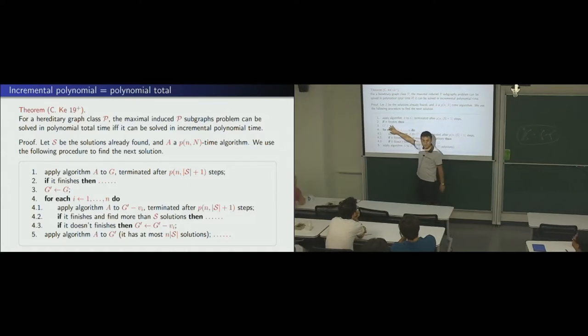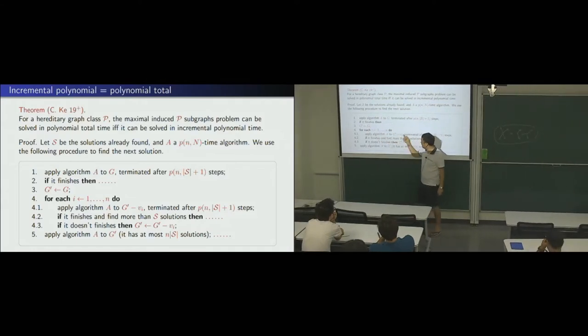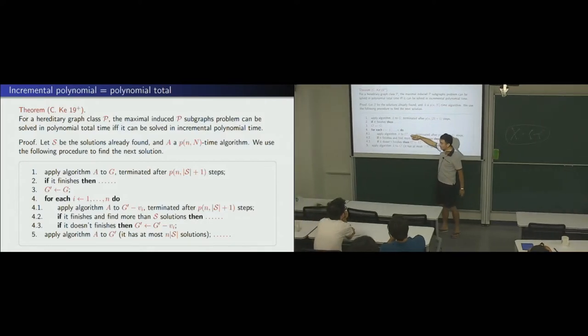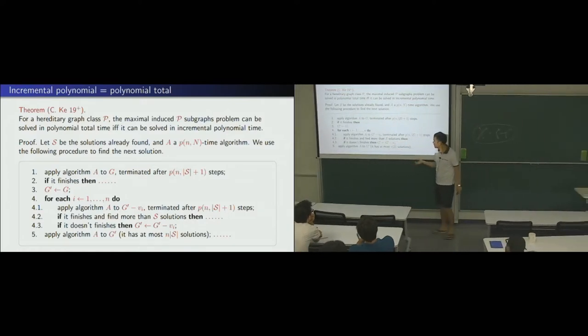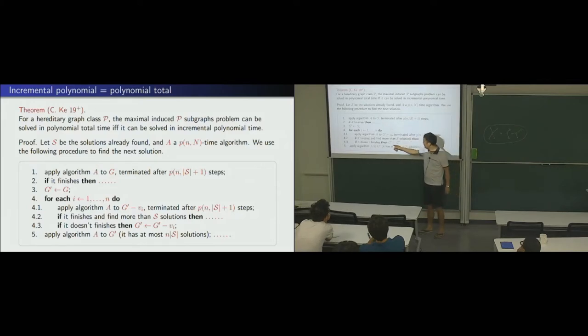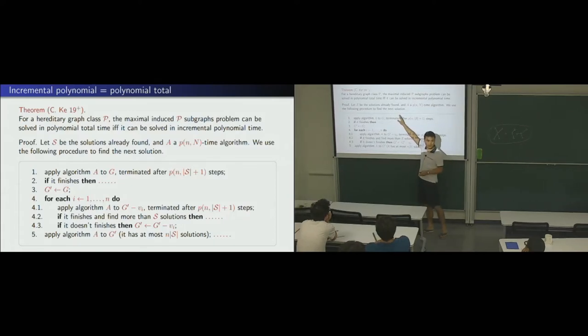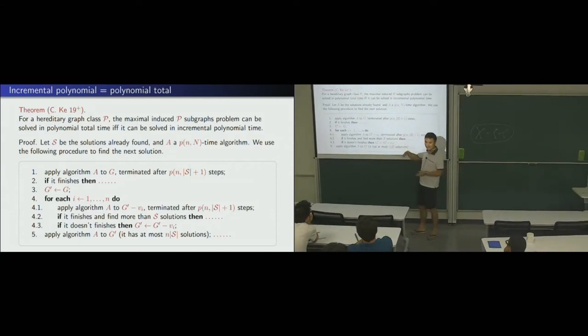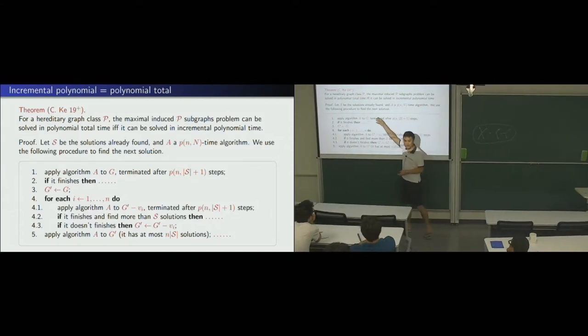Otherwise, what we do is this. We try to consider, take out each vertex out. Okay? We see, if this, so, basically, we take one vertex out, to see the minor graph still has a large number of vertices. If it still has a large number, so maybe this does not finish, then, we remove that vertex. So, basically, we keep one smaller and smaller graph, that still has more than S solutions. So, as long as we have more than S solutions, we can still find the next solution in the remaining graph.